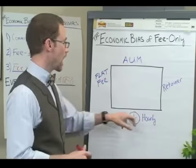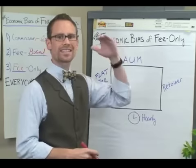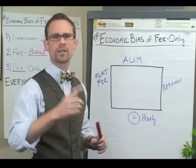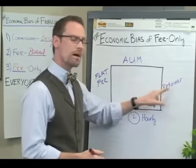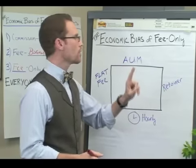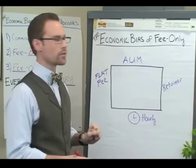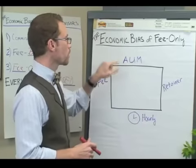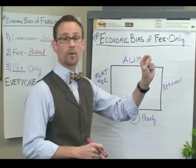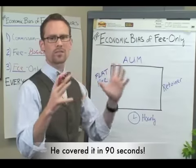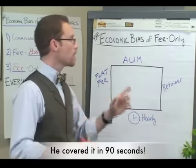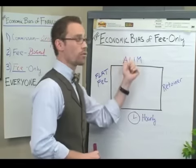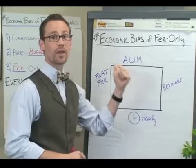The retainer-based model is where they establish a rate for your entire year's worth of financial advice going on into the future. And there again, they might not necessarily have an incentive that the assets under management financial advisor does. The AUM model, which is the most prevalent in the fee-only realm, is where they charge you a percentage of the assets that they are managing, in addition to the comprehensive financial planning that they offer throughout. The disadvantage here is that they may actually have an economic bias to tell you to put all your money in investments with them so they can make more money.